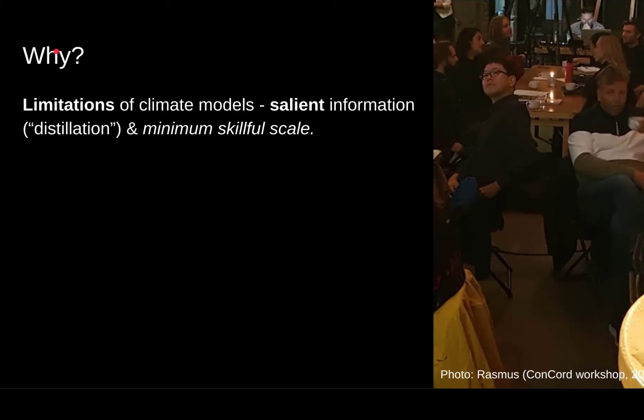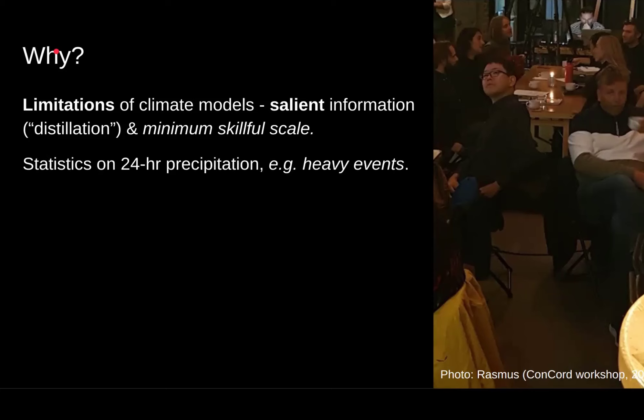We also know that the local climate depends on the large-scale conditions. So there's a scale dependency that we want to make use of, adding that information to the global climate model results in order to estimate what is happening locally. Here we focus on the statistics of 24-hour precipitation locally, for instance heavy events.